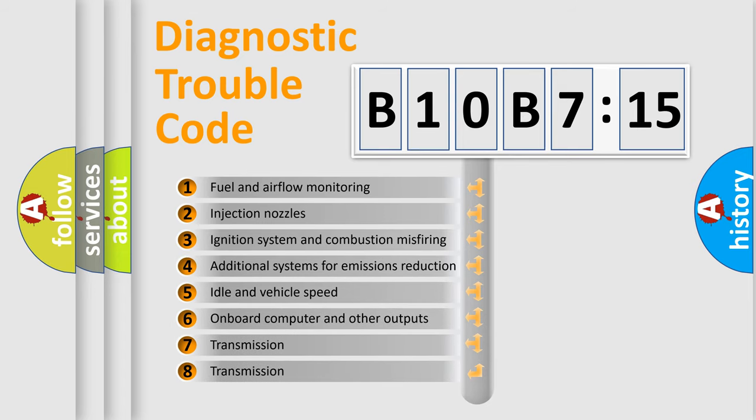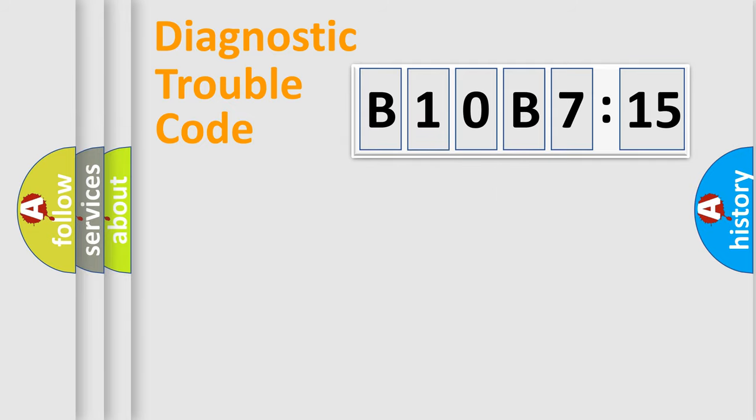The third character specifies a subset of errors. The distribution shown is valid only for the standardized DTC code. Only the last two characters define the specific fault of the group.